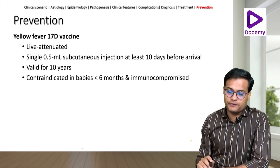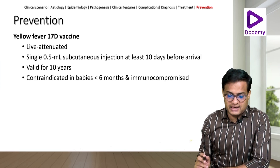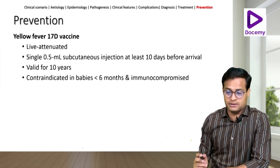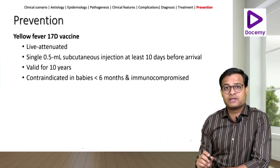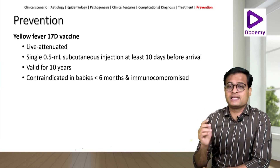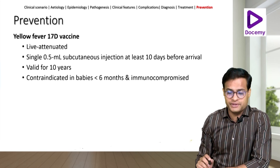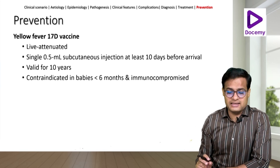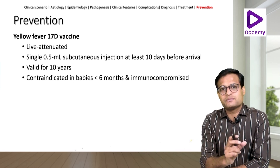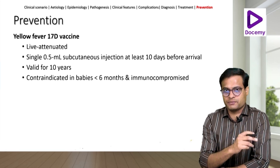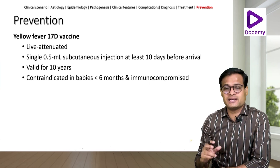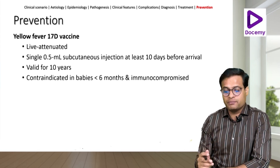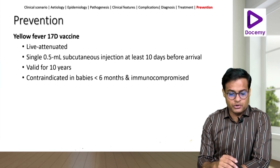Prevention is straightforward — there is a yellow fever 17D vaccine, which is a live attenuated vaccine. It is a single dose of 0.5 ml given subcutaneously and must be taken at least 10 days prior to arrival in South America or Africa. The vaccine is valid for 10 years, with validity starting from 6 days after administration, as 7 to 10 days are required for the development of immunity. It is contraindicated in babies less than 6 months old and in immunocompromised individuals.